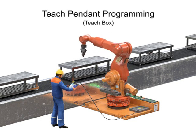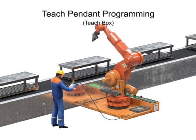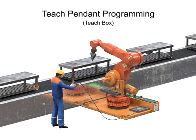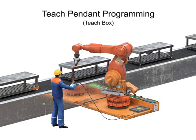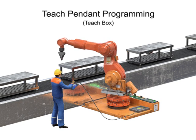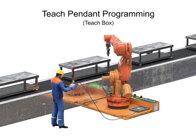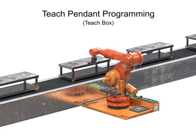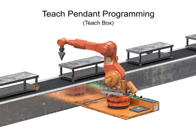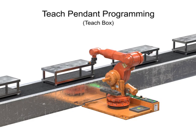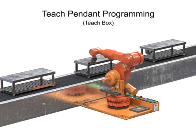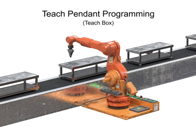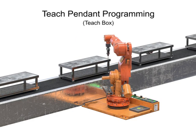ANSI standards recommend a speed of no more than 10 inches per second when programming. Once the technician has recorded and tested the program, the teach pendant is disconnected and the robot can operate the stored program at full speed. Teach pendant programming is often associated with controlled path and point-to-point control.